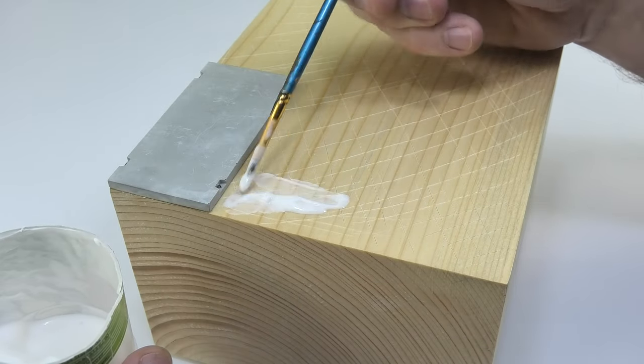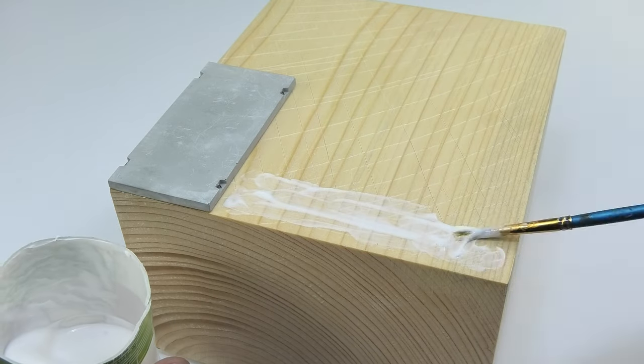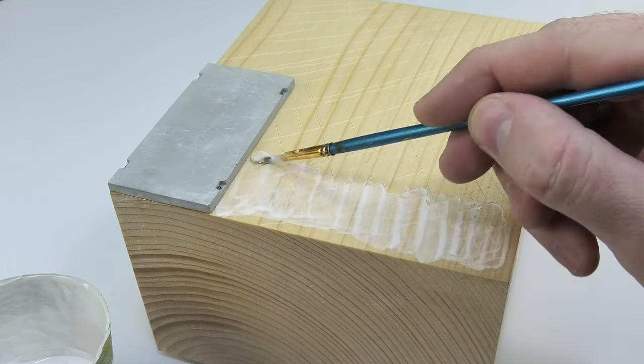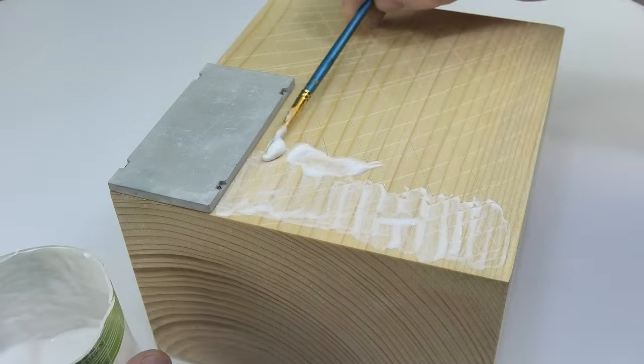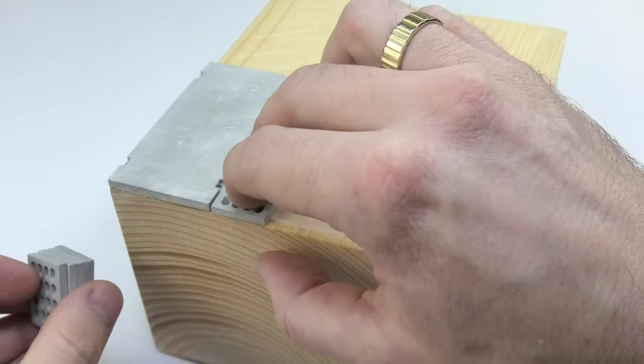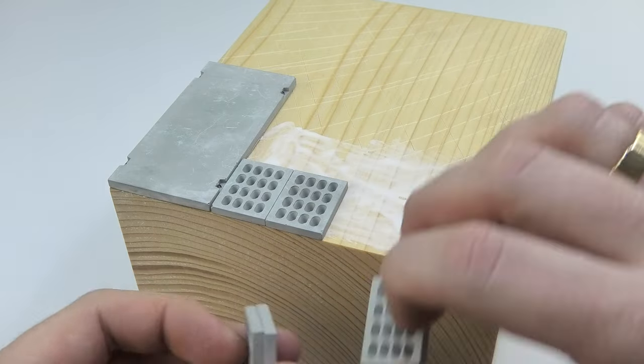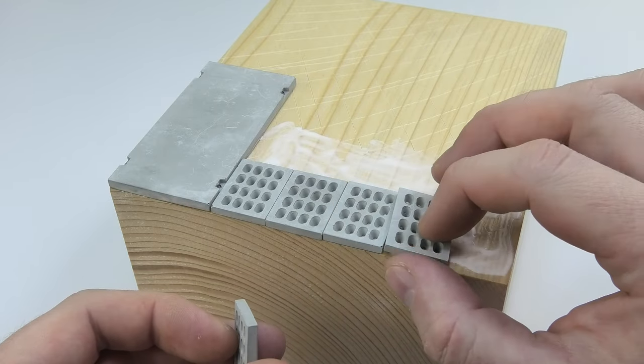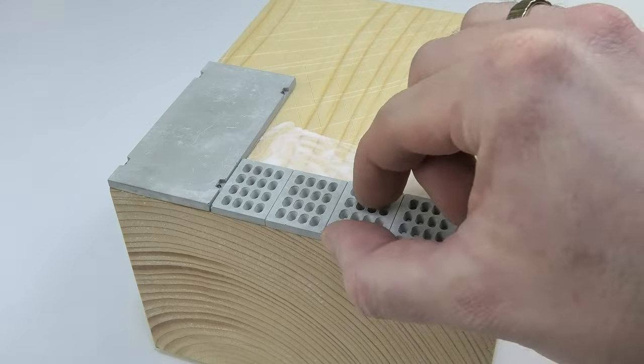Now I could easily apply PVA glue and stick the plaster elements of the road and the square on. This single road plate was there for two reasons. The first one was completely prosaic. I missed a few perforated panels.